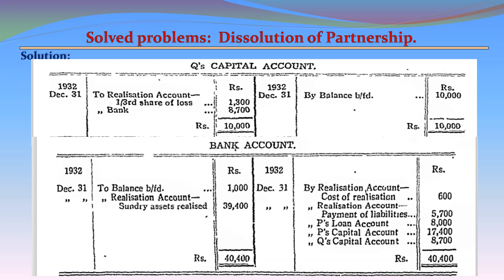Bank Account: Debit side — Balance b/d 1,000; Realization Account — sundry assets realized 39,400; Total receipts 40,400. Credit side — By Realization Account cost of realization 600; By Realization Account payment of liabilities 5,700; By P's Loan Account 8,000; By P's Capital Account 17,400; By Q's Capital Account 8,700; Total payments 40,400. The bank account is thus closed.